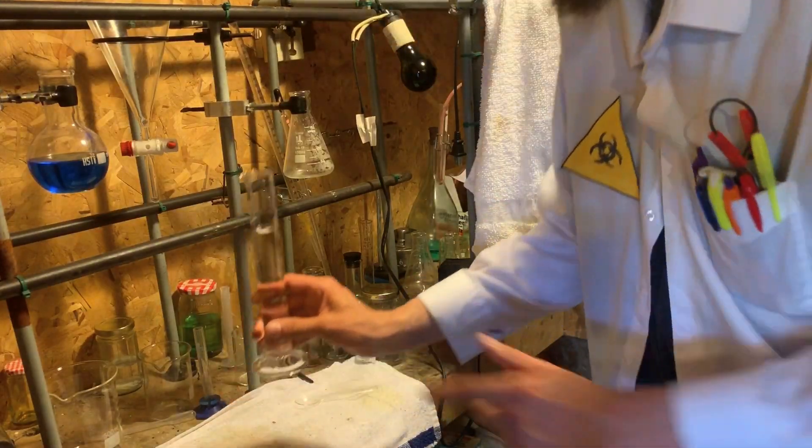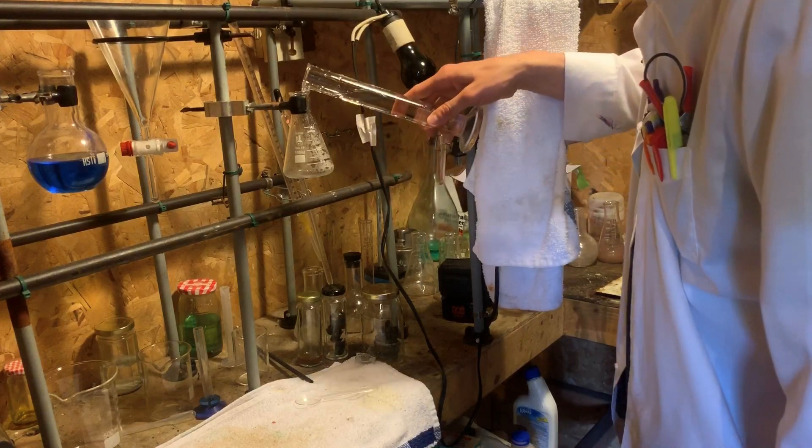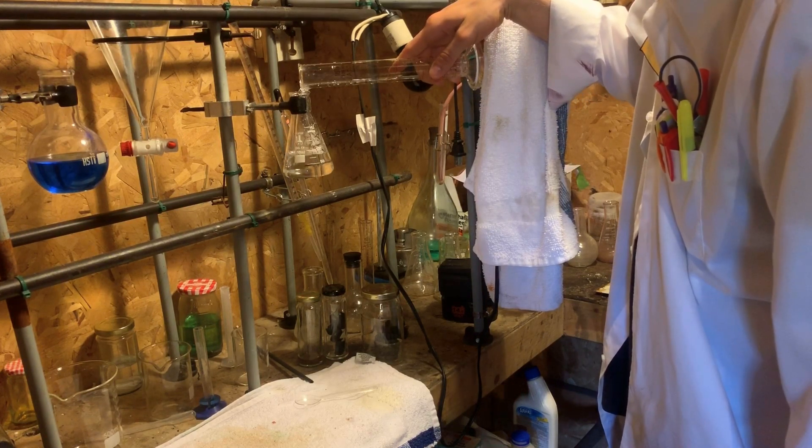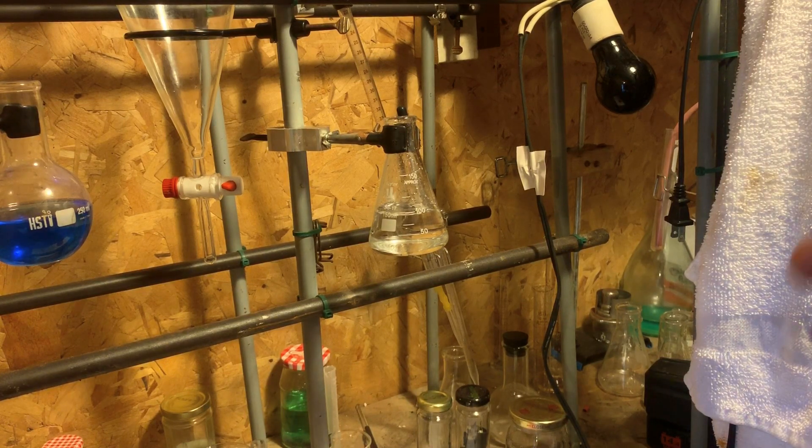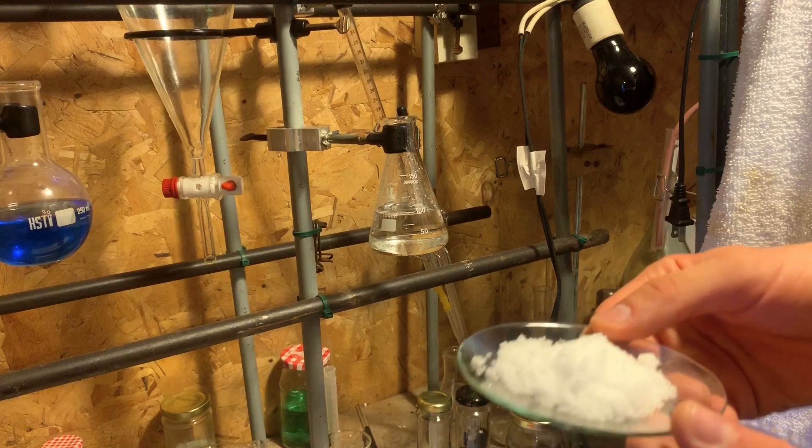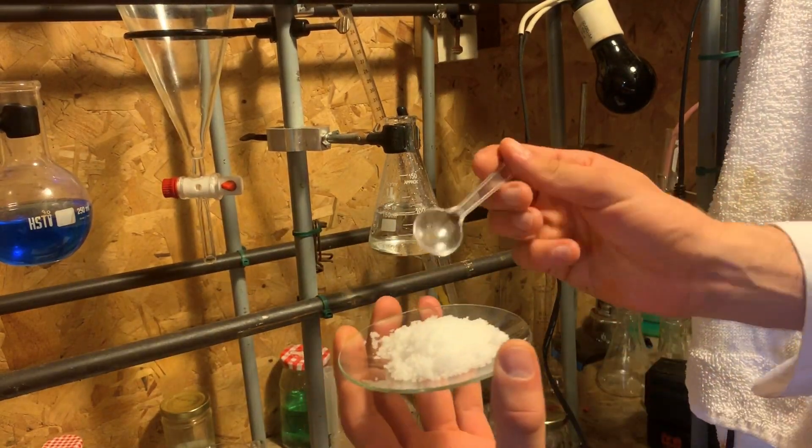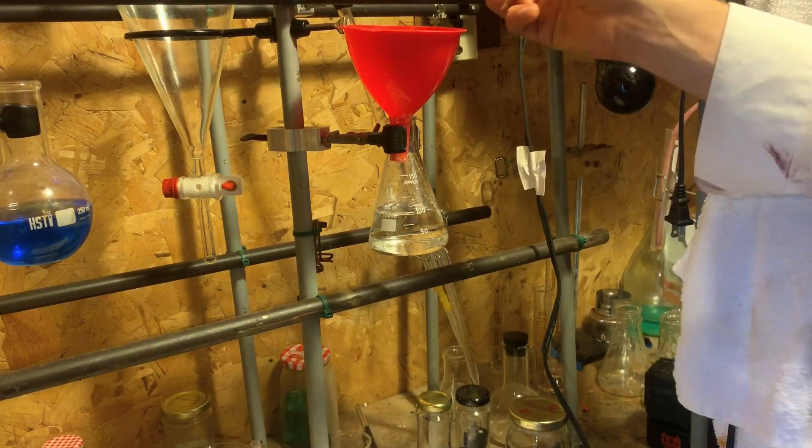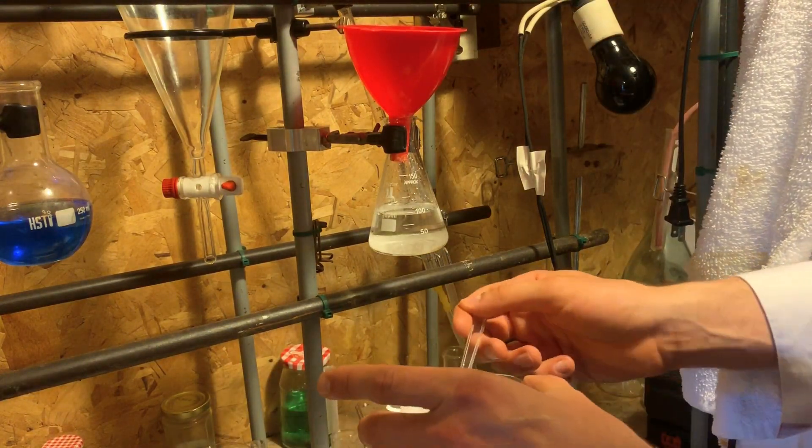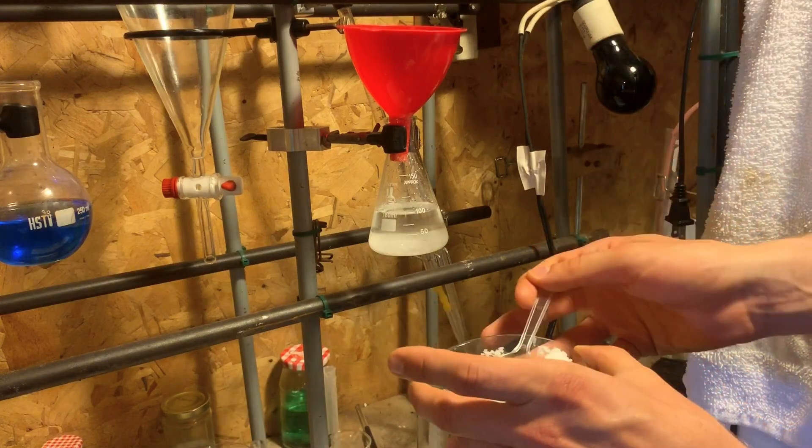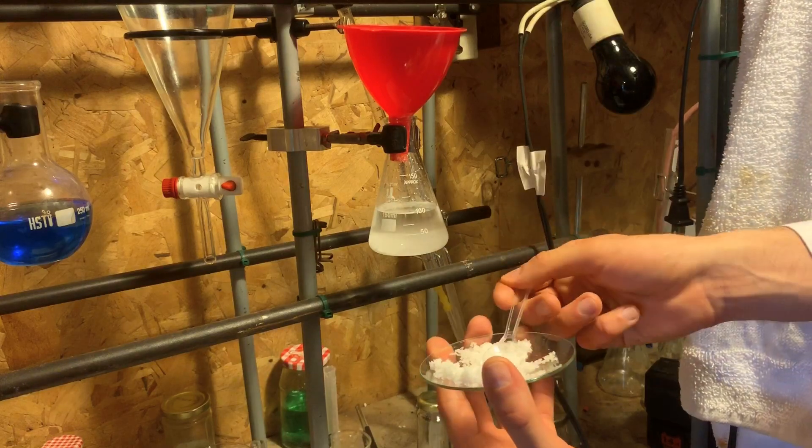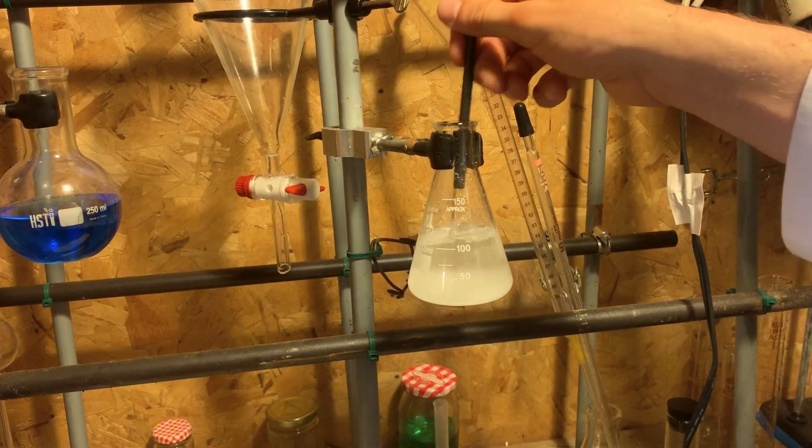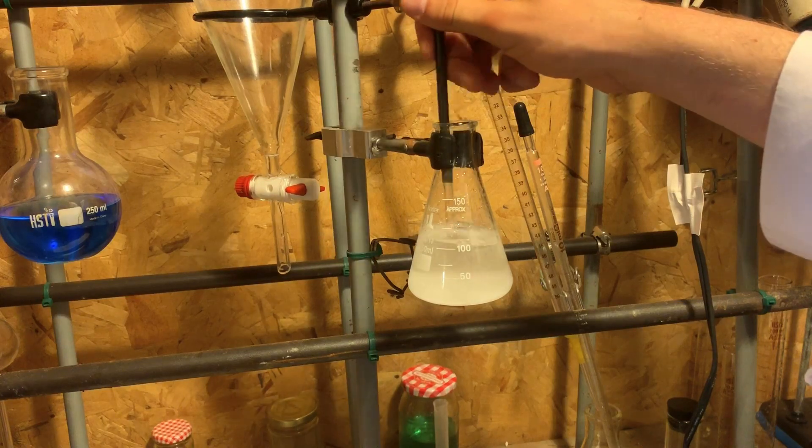I'm going to add 100 milliliters of water to this flask. So to create an aqueous solution of sodium bromide, I'm going to take our sodium bromide here and add it to the water. And we need seven grams of this. I'm now going to stir the solution around. This will help to dissolve the sodium bromide into the water.